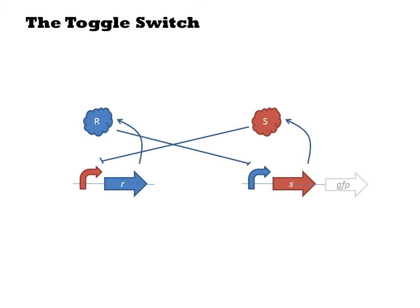When we have two repressors that inhibit each other's transcription, one will dominate over the other resulting in bistability. The system of molecules has two steady states: one in which R dominates and S is repressed, and the other in which S dominates.